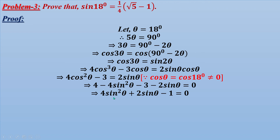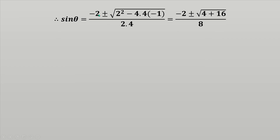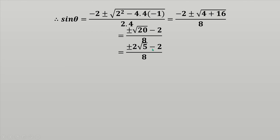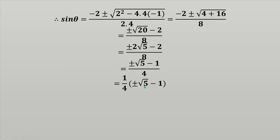This is in the form ax² + bx + c = 0, where a = 4, b = 2, c = -1, and x = sinθ. Using the quadratic formula: sinθ = (-b ± √(b² - 4ac))/(2a) = (-2 ± √(4 + 16))/8 = (-2 ± √20)/8 = (-2 ± 2√5)/8 = (±√5 - 1)/4 = (1/4)(±√5 - 1).